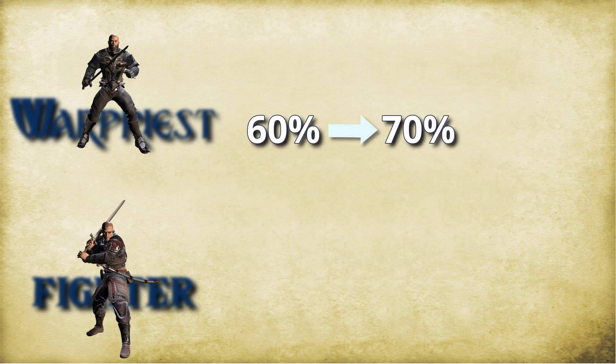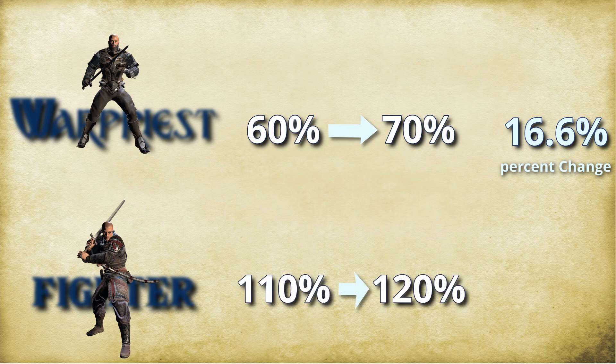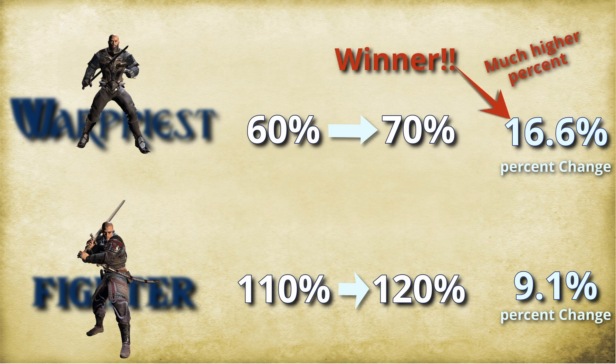The fighter has a beefy plus fourteen to-hit and the war priest only has a plus ten, and they are both trying to hit an enemy with a 20 armor class. I want to make sure my Guidance cantrip has the biggest impact possible, so I compare percent increases. Giving the bonus to the war priest moves them from 60 percent to 70 percent — a 16.6 percent increase. Giving the bonus to the fighter moves them from 110 to 120 percent — only a 9.1 percent increase. So clearly, according to percent increase analysis, buffing the war priest is better.